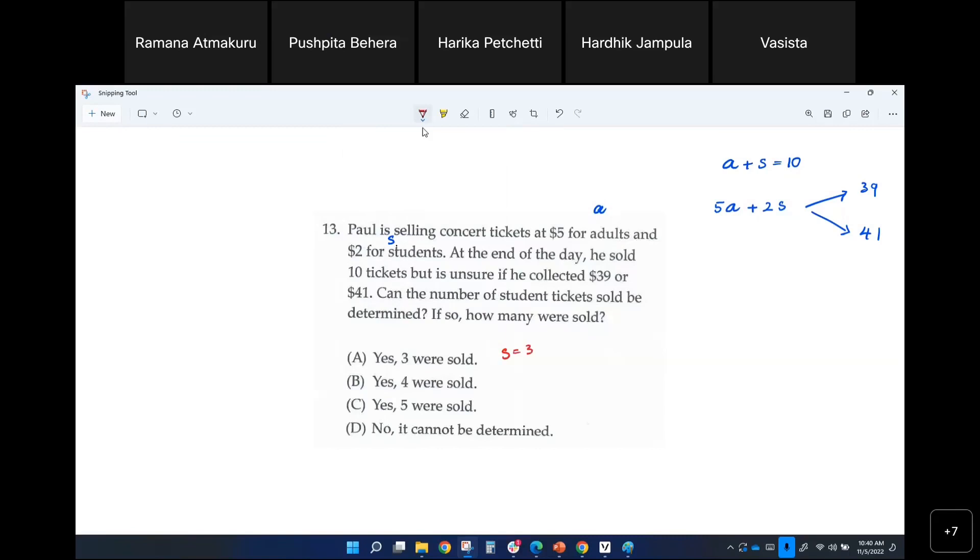From this answer choice. That means your adult tickets has to be 7 because the total has to be 10. Can you plug it in now here and see which one matches with any of these values?